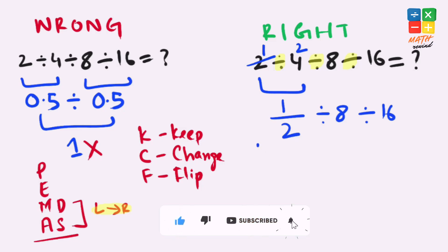So K means we keep the first fraction as it is, change means we change this divide sign to multiplication, and flip means we flip this 8 over 1 as 1 over 8 here, and the same applies to the second fraction.